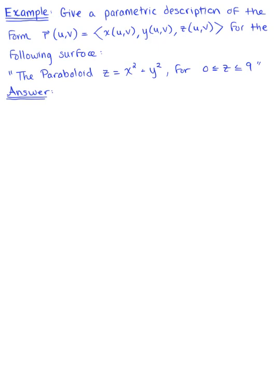Give a parametric description for the following surface. We have the paraboloid z is equal to x squared plus y squared, for z greater than or equal to 0, less than or equal to 9.